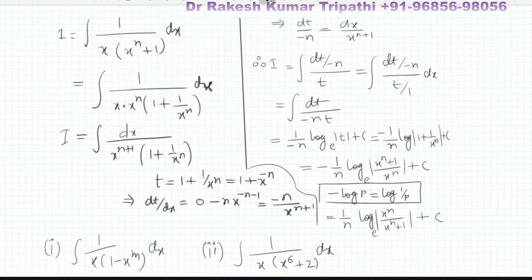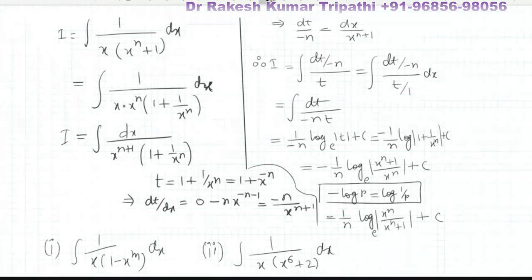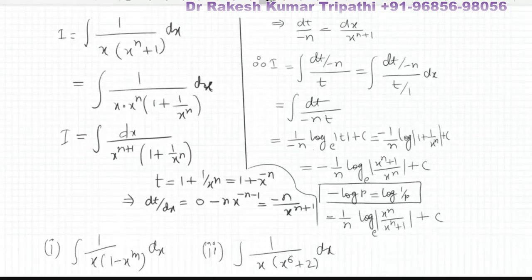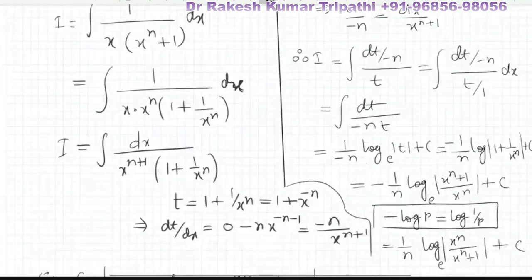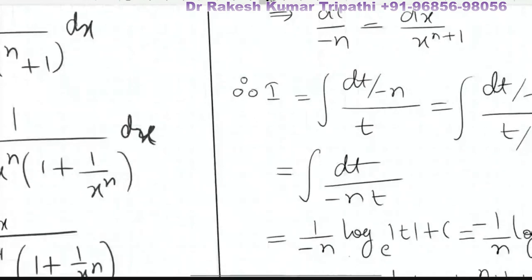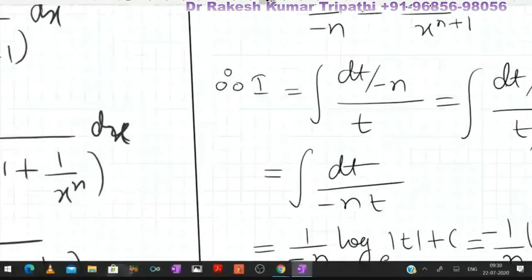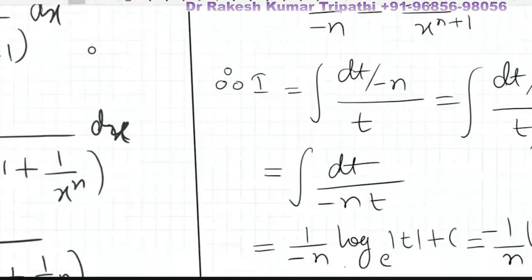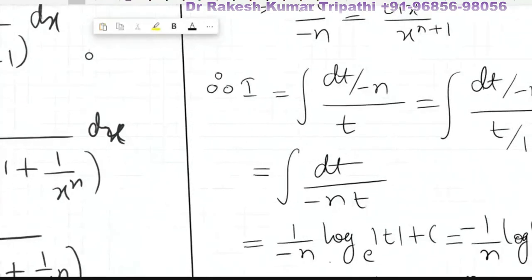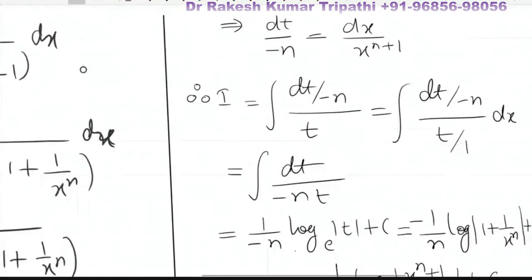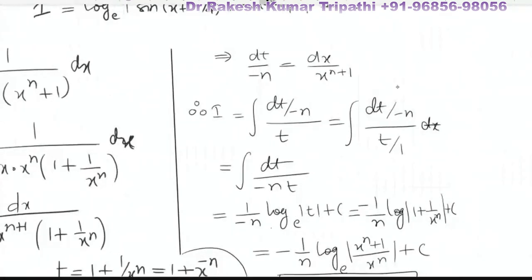A student asks about the placement of dx, and the instructor confirms: therefore I is equal to the integral, and dx upon x to the power n plus one is correctly placed in the expression dt/(−n·t).